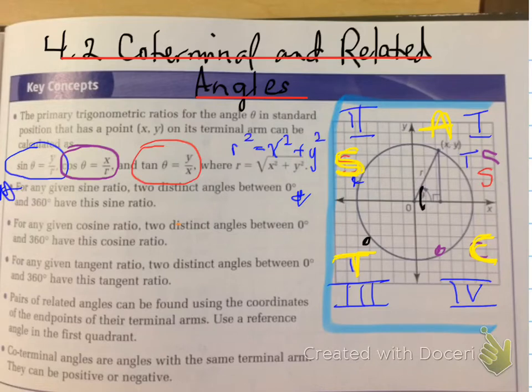A reference angle is an angle from the terminal arm to the closest x-axis. An angle in standard position is measured from the positive x-axis in a counterclockwise direction to the terminal arm. That gives you a positive angle of standard position.